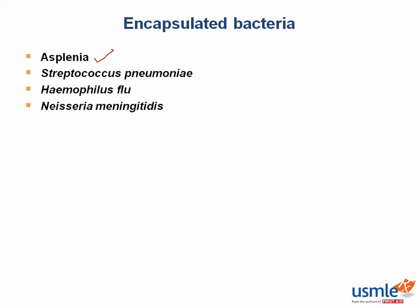Why might people lack a spleen in the first place? Well, in the setting of severe trauma, a splenectomy may be necessary. But there are also hematologic diseases that can affect the spleen — for example, a disease that causes recurrent splenic infarctions and effective asplenia.